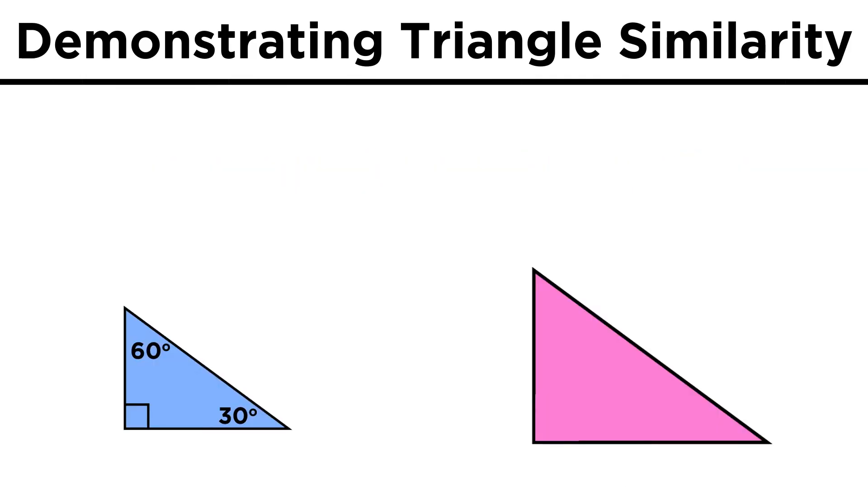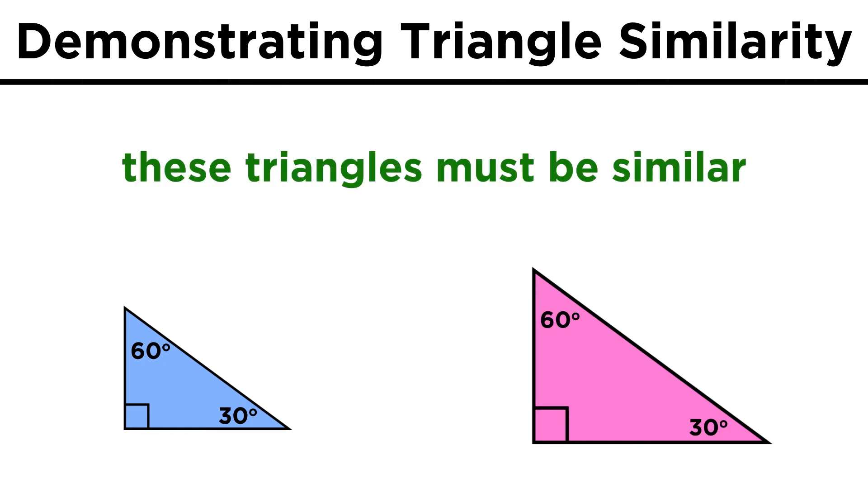Also, if this triangle has angles of thirty, sixty, and ninety, and so does this one, these triangles must be similar no matter what the side lengths.